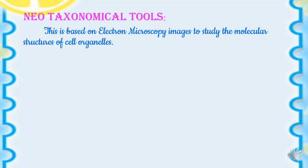Neotaxonomical tools are based on electron microscopy images to study the molecular structures of cell organelles. If you want to study the structures of cell organelles, you can refer to the electron microscopic images. This is a new method of taxonomical tool.